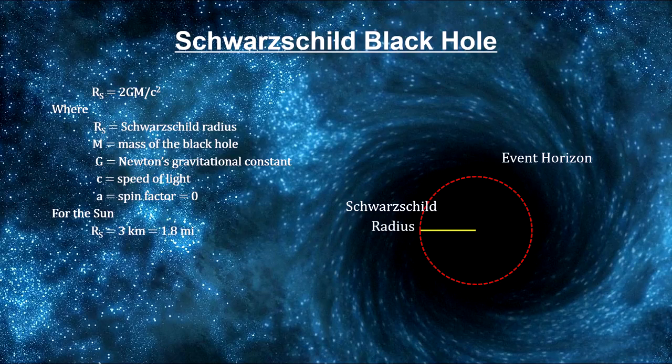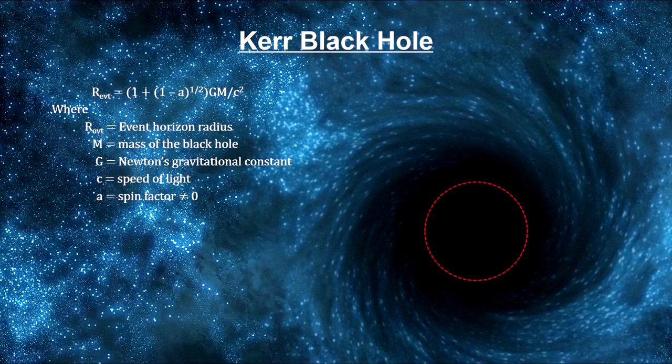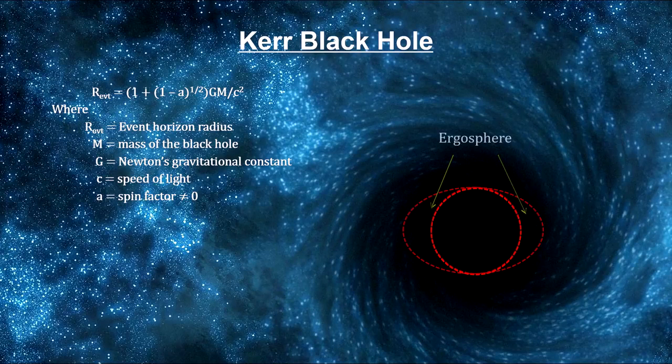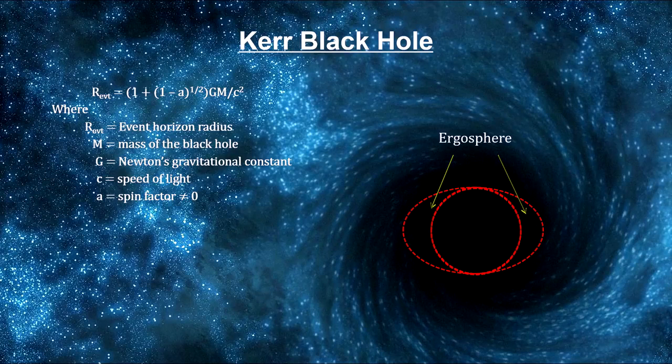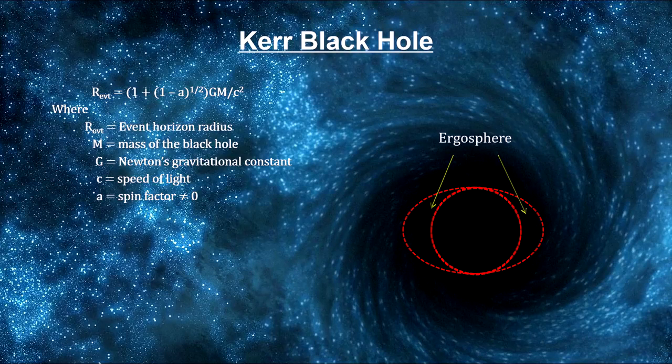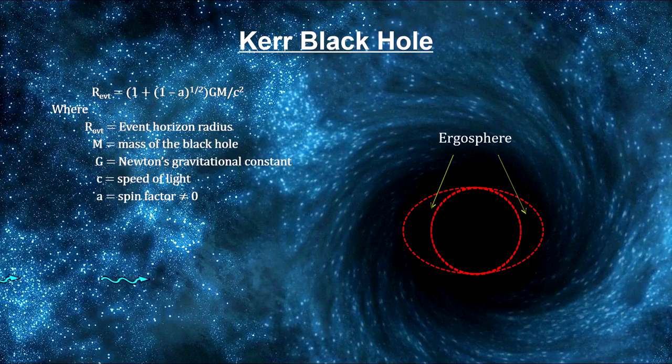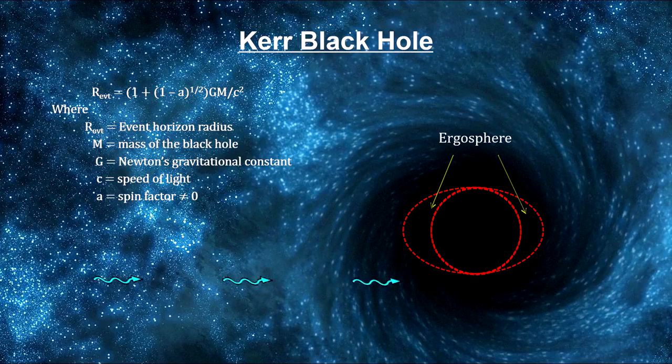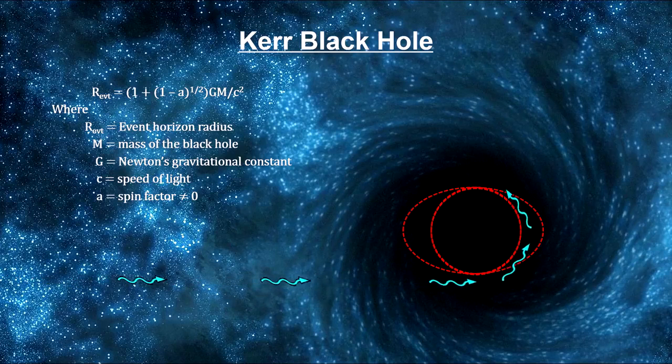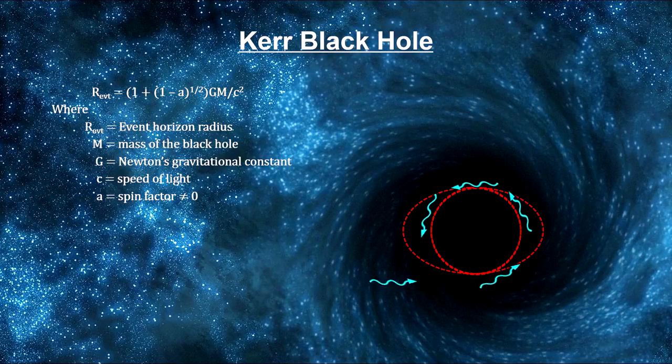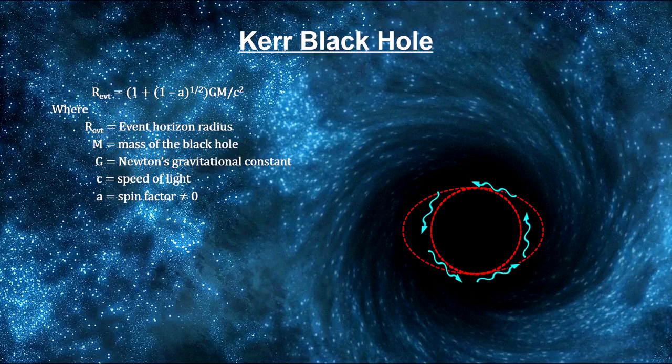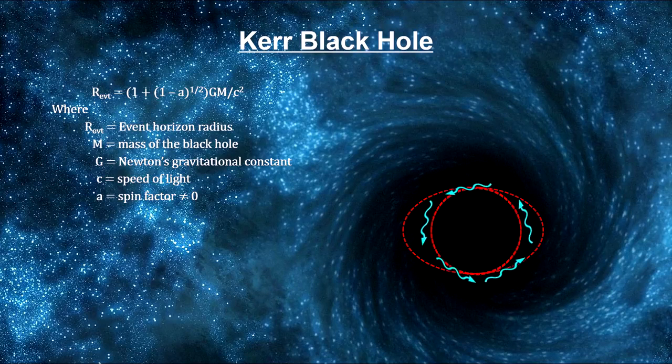But it would be the rare black hole that doesn't spin. In 1963, Roy Kerr developed a general solution for spinning black holes. It showed that there is a second region, beyond the event horizon, that defines a volume around the black hole called the ergosphere. In this region, space itself is dragged around by the black hole's spin. It's called frame dragging. Also in this region, light can enter stable orbits around the black hole. This would produce a photon spherical shell encasing the black hole with the light from all the stars in the universe accumulated over the entire age of the black hole.